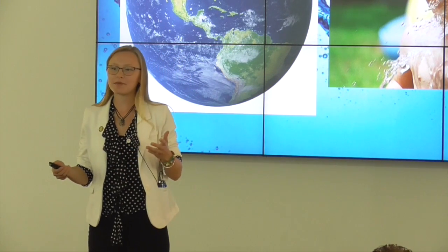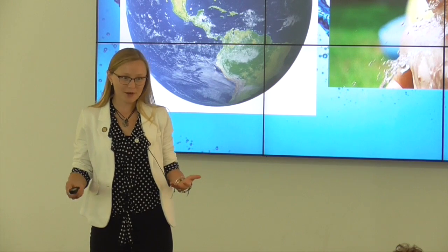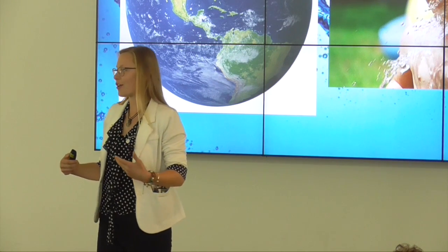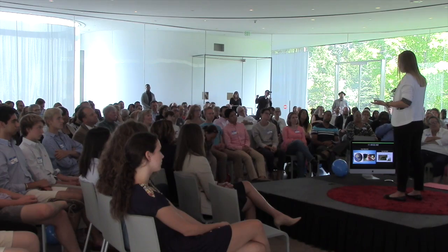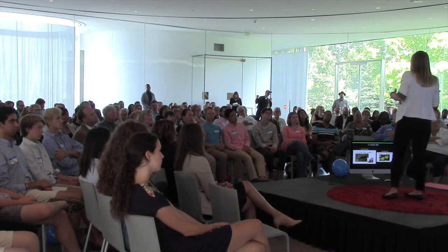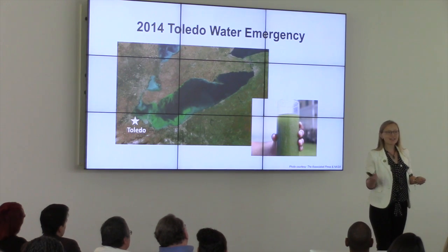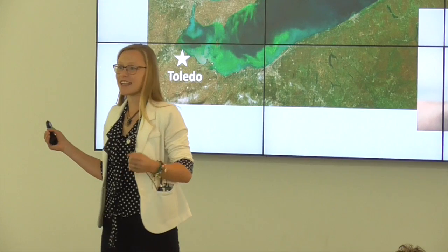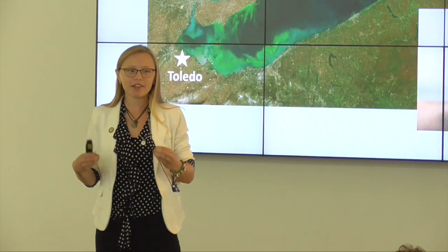So what if someone presented a scenario to you and said that you can no longer drink your water? Or that your water was toxic? What would you do? This issue became a reality in 2014 in Toledo, Ohio, where we're all at right now. Our drinking water was infected by a toxin, by an algae. And the picture that you're seeing is a satellite image of what our lake, one of our great lakes, looked like from space.